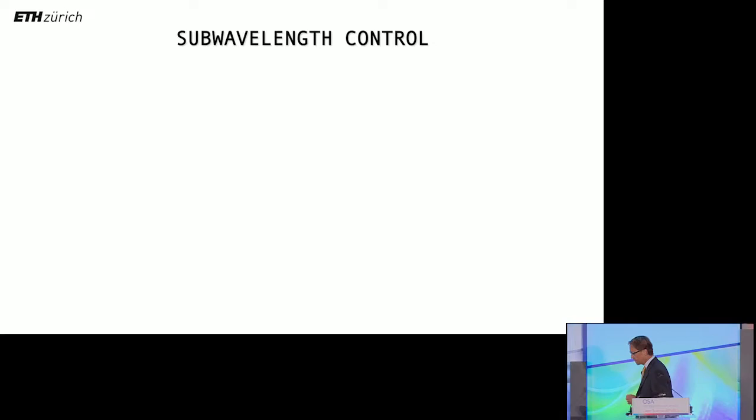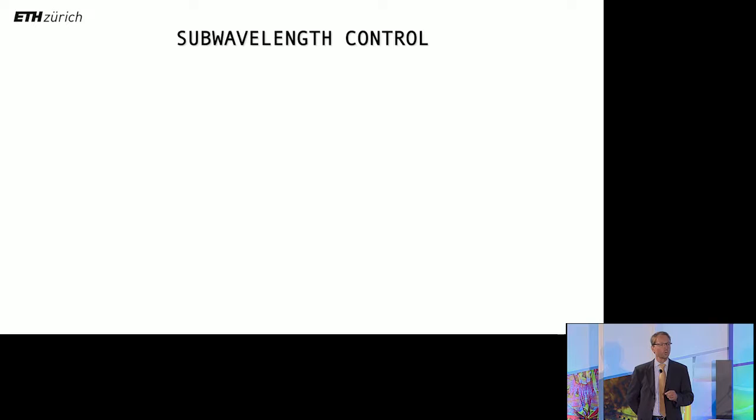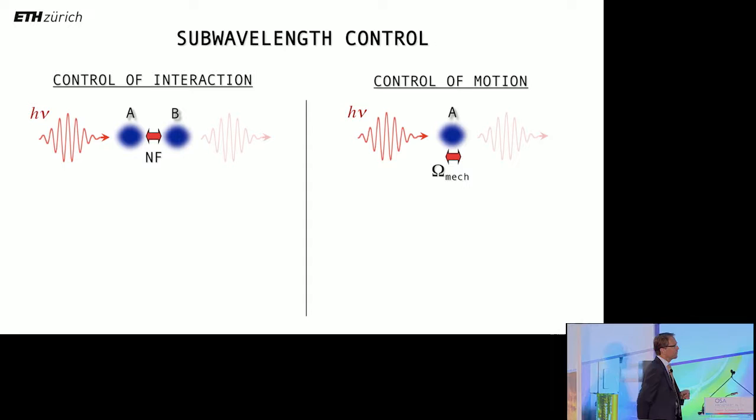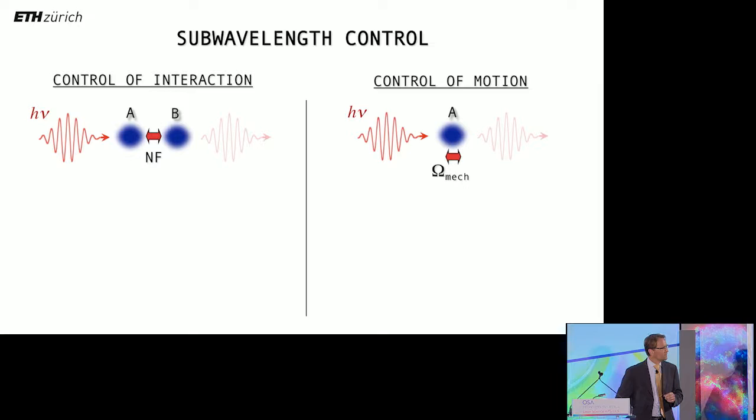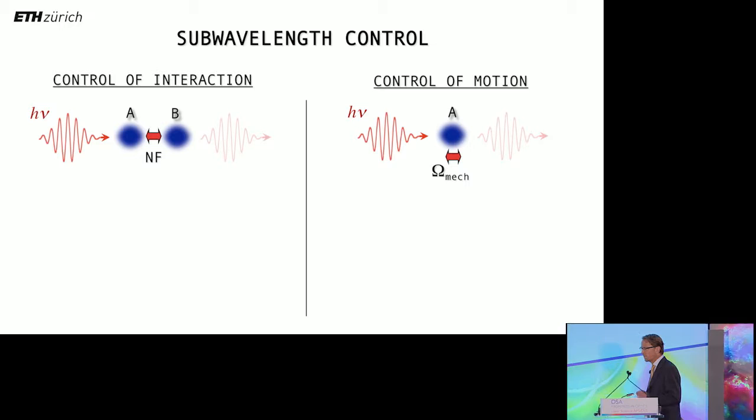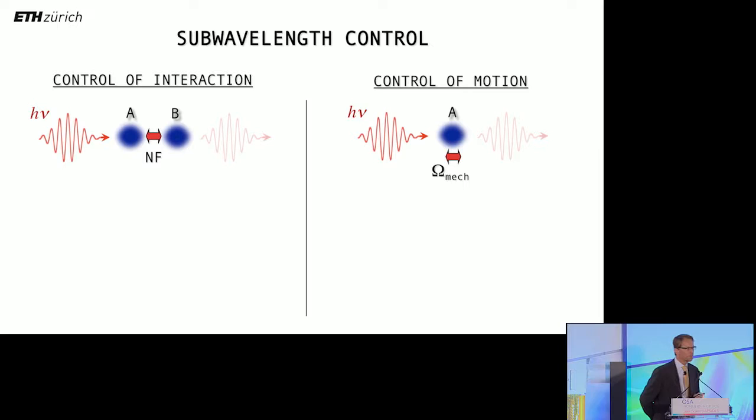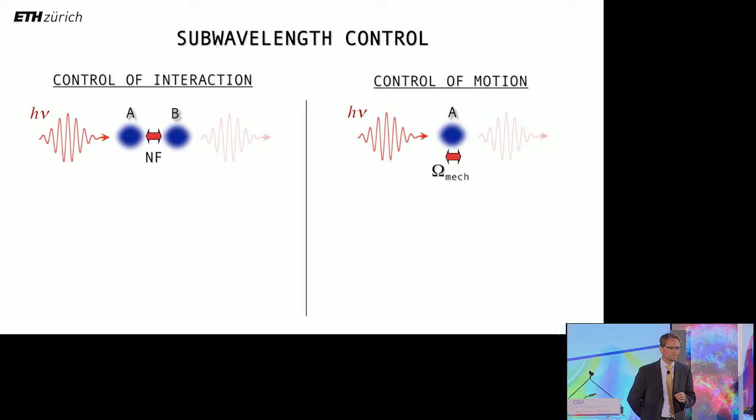So, my objective here is to give you two examples of research where sub-wavelength control is critical. On the left, you see we have two entities, two nano-scale objects that are closely spaced. We study or capitalize here on a near-field interaction between these two objects called A and B. On the right-hand side, we use optical fields to control a nano-scale object. We control the mechanical degrees of freedom with nanometer precision.